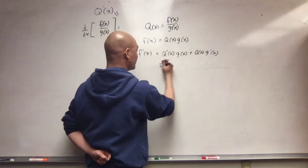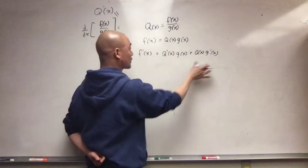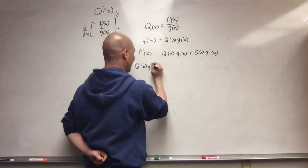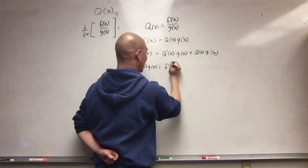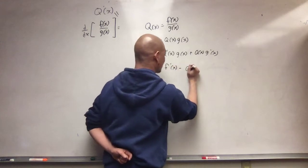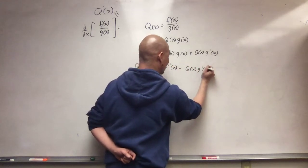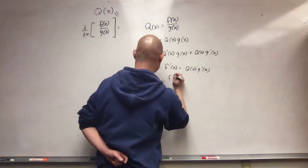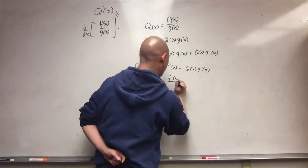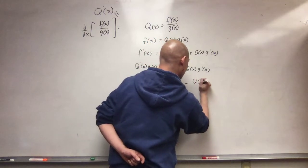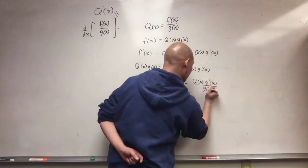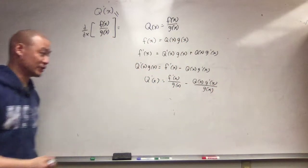Now, I can solve for q prime of x. I can just say q prime of x, g of x, is f prime of x, minus q of x, g prime of x. And q prime of x, is just f prime of x over g of x, minus q of x, g prime of x over g of x.